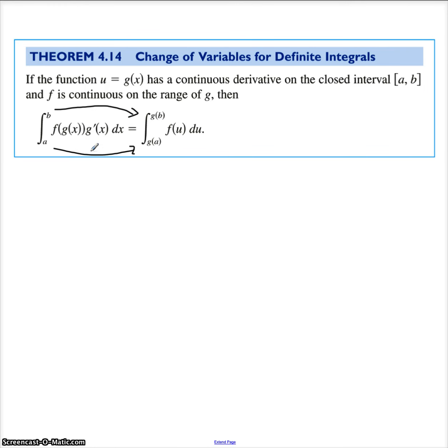Now, the only difference between this and what we have been doing is now we're evaluating at specific limits, so we won't have that plus c, but we need to compute those specific limits. And so when you do these problems, you need to do what you did before. You need to identify a u, and then you need to identify a du.